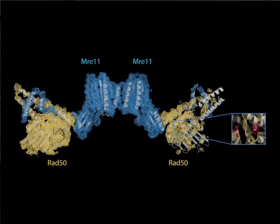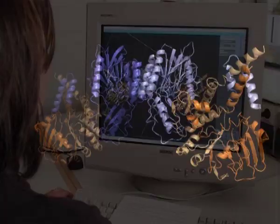This model led us to some quite big surprises of the protein structure. The structure is a surprisingly open complex with a central MR11 nuclease dimer and two widely separated ROT50 ATPase domains.